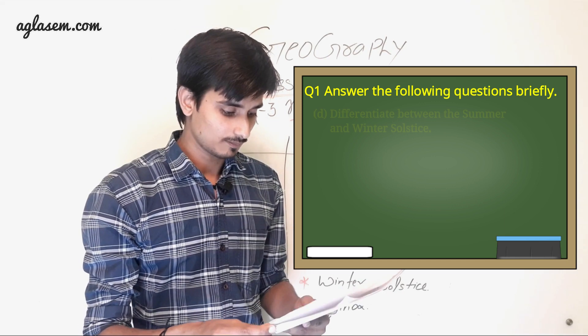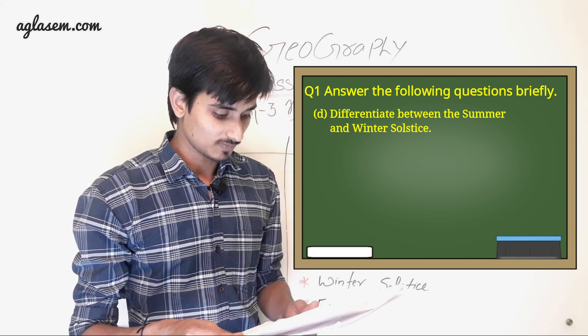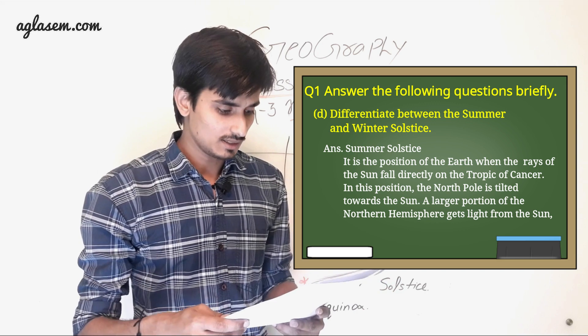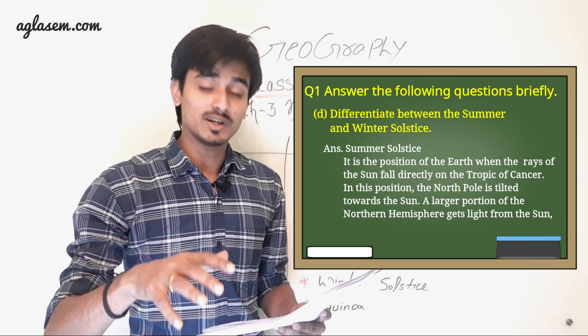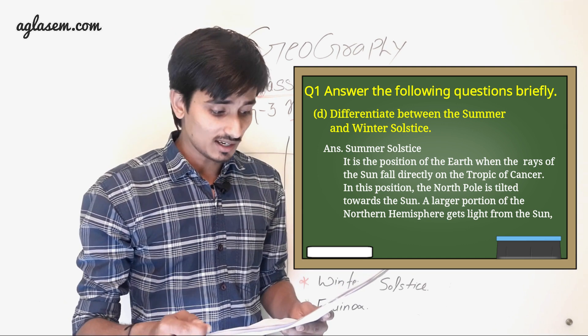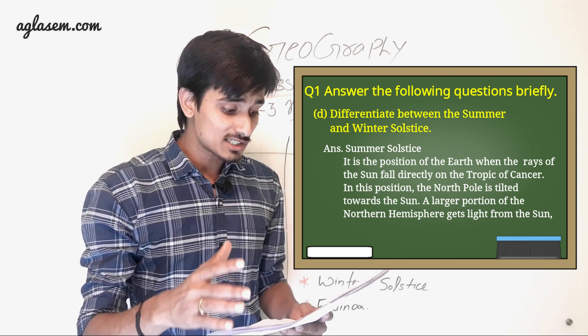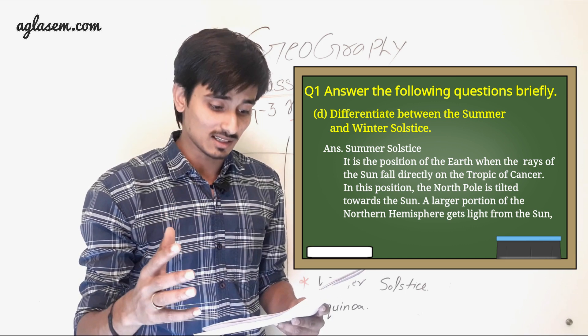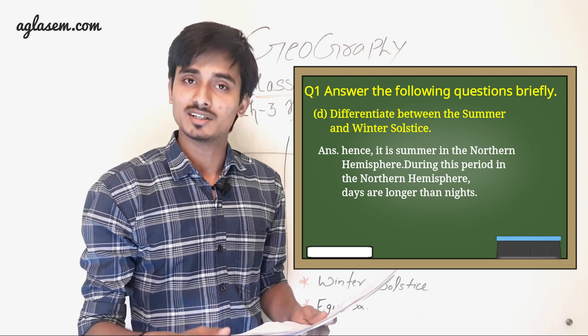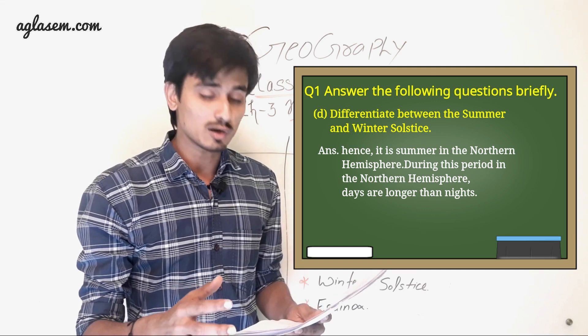D. Differentiate between the summer and winter solstice. So answer is: Summer solstice. It is the position of the Earth when the rays of the Sun fall directly on the Tropic of Cancer. In this position, the North Pole is tilted towards the Sun. A larger portion of the Northern Hemisphere gets light from the Sun. Hence, it is summer in the Northern Hemisphere. During this period in the Northern Hemisphere, days are longer than nights.